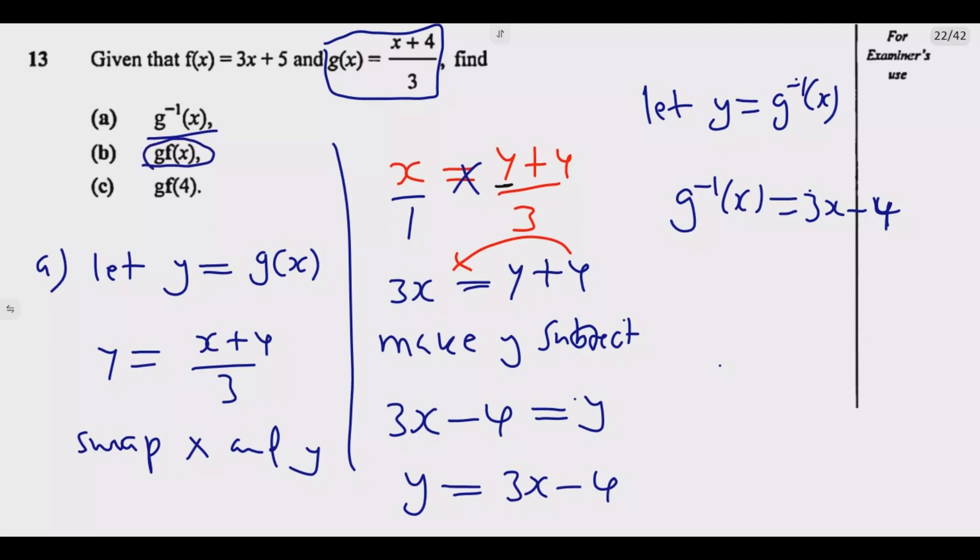The second one, g of f(x). So this is the composite function. So we substitute the expression for f(x). f(x), this is f(x). So whatever there is x in g(x), which is this one, we put f(x). So I can come here, just create space here. So I have these two functions.